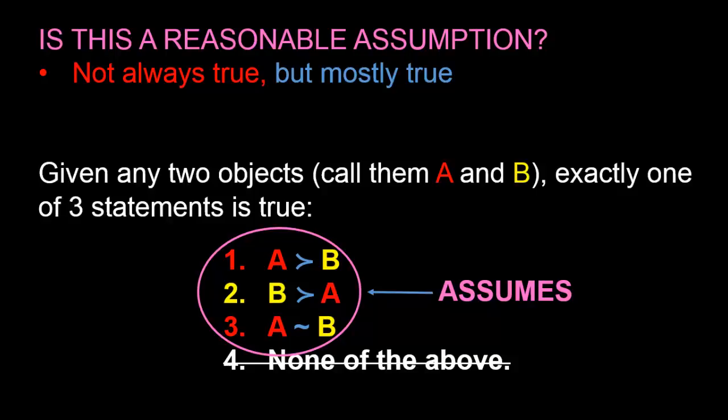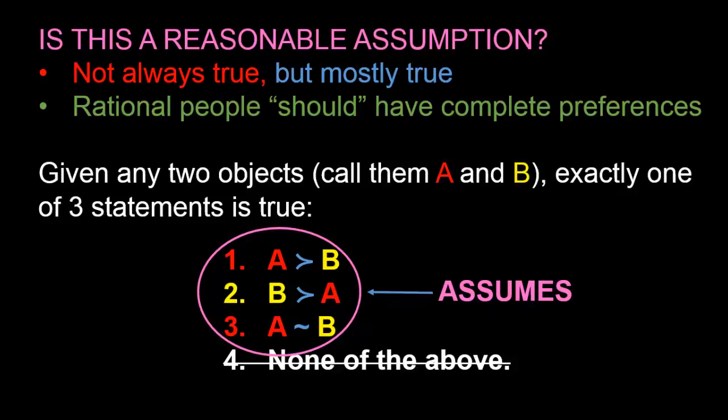Another reason for imposing this assumption is that economists believe rational people ought to have complete preferences — when given two objects, a rational person should be able to give a definite answer as to whether he strictly prefers one to the other or is indifferent between them. Yet another reason is that it simplifies our analysis of how people make choices. Altogether, we've listed three reasons for imposing the axiom of completeness, and we are going to maintain this assumption for the rest of this series of videos.